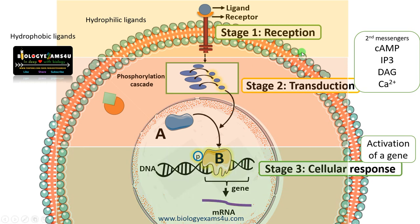Let me summarize. The first stage in cell signal transduction is called reception, where the ligand is received by the receptor. Upon binding of the ligand to the receptor, it undergoes a conformational change. The extracellular domain of the receptor is activated, which further activates a series of signaling molecules along with second messengers that transmit the signal from the receptor to the target molecule by sequential activation — this is called transduction. Finally, this target molecule activates or causes expression of a gene leading to a cellular response, often leading to cell growth, cell division, or cell differentiation. These are the three stages of cell signal transduction.